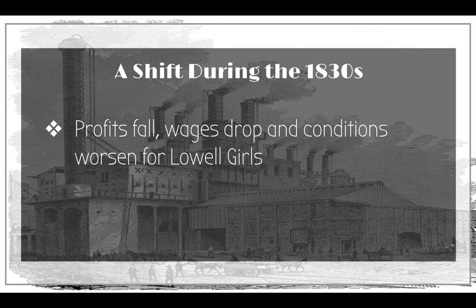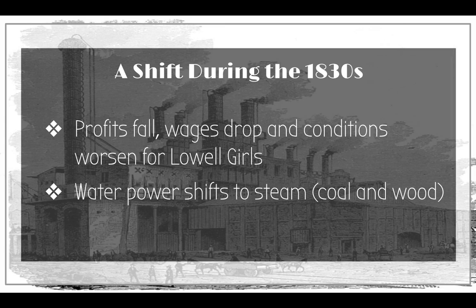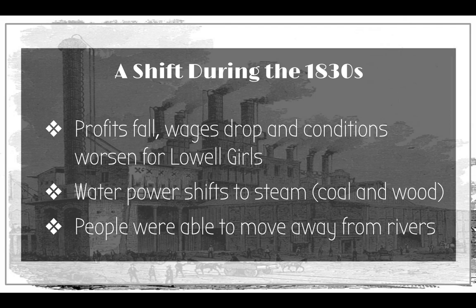In the 1830s, we're going to see a fall in profits for the textile industry, so wages dropped and conditions got worse for workers, particularly the Lowell girls. The idea of using water to power the factory shifted to steam — particularly coal and wood. This allowed people to move away from rivers, so cities could now be built in places where water wasn't necessarily as essential, beyond the New England territories.